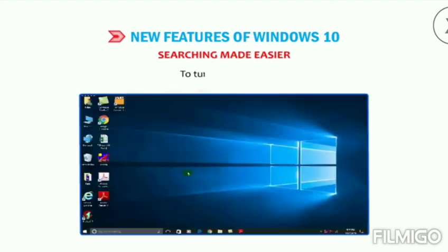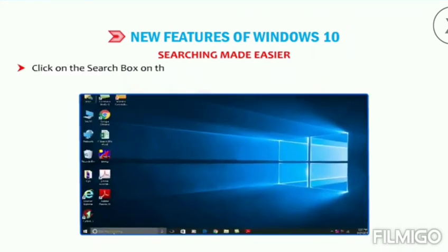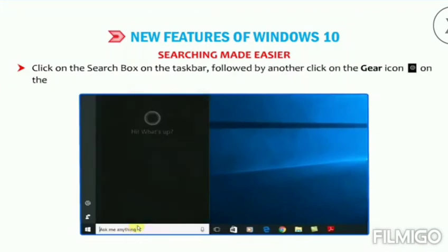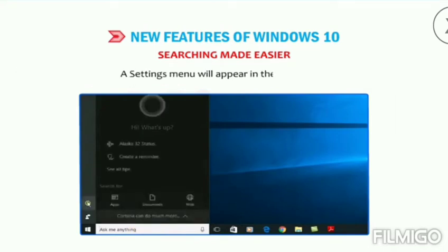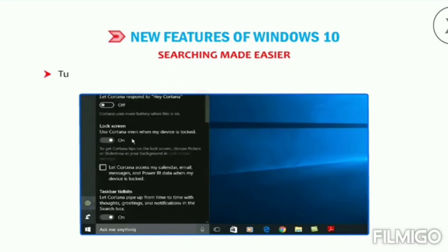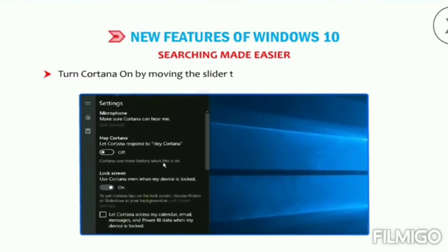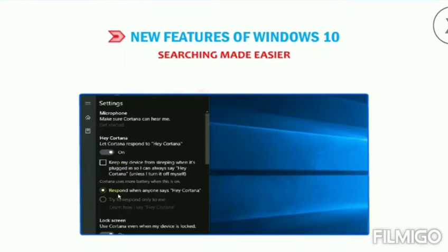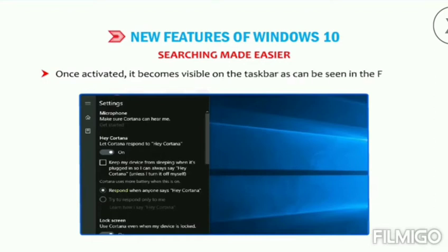To turn Cortana on, click on the search box on the taskbar followed by another click on the gear icon on the left side of the displayed menu. A settings menu will appear in the right pane. Turn Cortana on by moving the slider to the right in the settings menu. Cortana will start gathering information about you. Once activated, it becomes visible on the taskbar as can be seen in the figure.